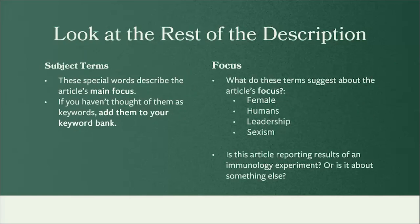After deep reading the citation, scroll down on the long description of the article to see the subject terms it's been tagged with. These vocabulary terms, which function like hashtags, will tell you what the article is about, as well as what it's not about. You might consider adding one or more of them to your bank of keywords. This article is in an immunology journal, but what do its subject terms tell us about the article's specific focus?